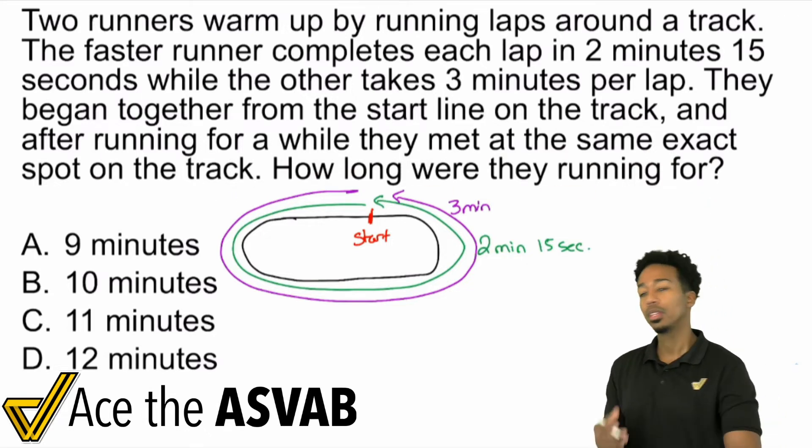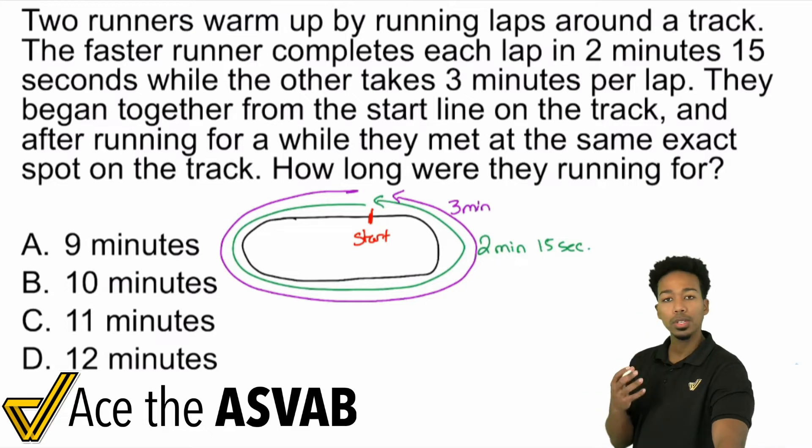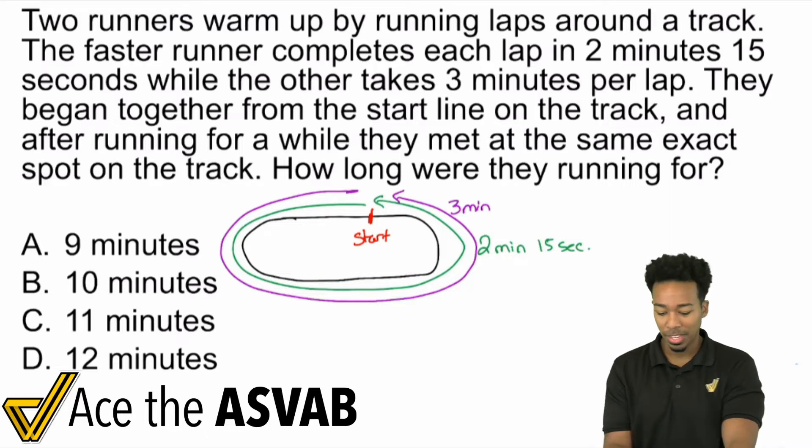This is the problem where you need to figure out what type of math you're doing. The math was not explicitly told to you. But were you able to realize this is a least common multiple problem? This is a least common multiple. How do I know that? Well, think about it like this.